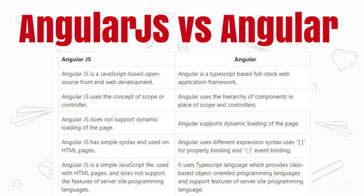Both are similar as front-end open source platforms that create dynamic single page applications, but they have some differences. AngularJS uses the concept of scope and controllers. Angular, which uses a superset of ECMAScript 6 with backward compatibility with ECMAScript 5, is component-based with a hierarchy of components — there is no scope and controller concept in Angular.